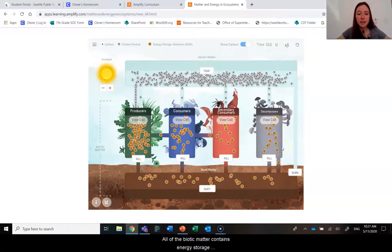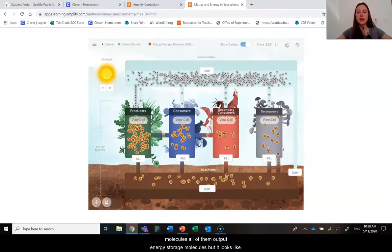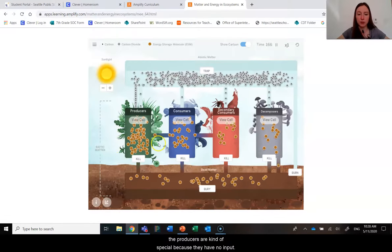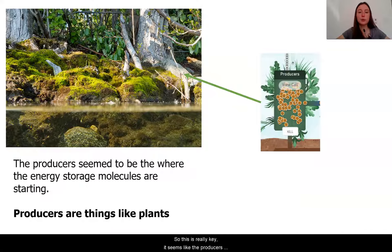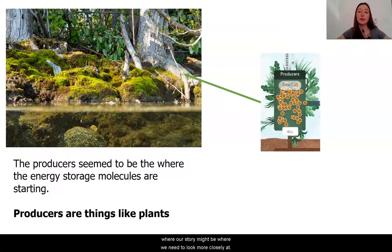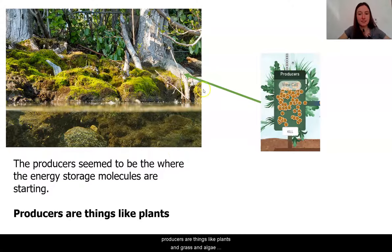All of the biotic matter contains energy storage molecules, and all of them output energy storage molecules. But it looks like the producers are special because they have no input. This is really key — the producers seem to be where the energy storage molecules are appearing, or coming into, the ecosystem. They did not have energy storage molecules going in, yet somehow that group still had energy storage molecules inside. We can see in the model that plants and grasses represent these producers — things like plants, grass, algae, and others. So we are going to think about how these energy storage molecules are getting there.